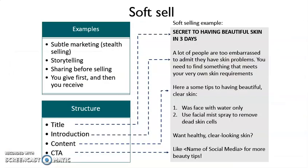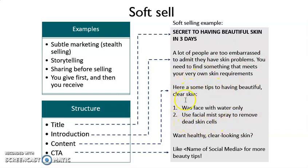How about soft selling? Soft selling normally has its own structure. For example, it must have a title, a topic to discuss, some story to share, some information to give. Maybe you want to share extra tips for people to understand better. And last, you can provide them with a call to action (CTA) — give them a chance to provide feedback, ask them to like your page, or ask them to share information. We do not mention price, but we give them information.